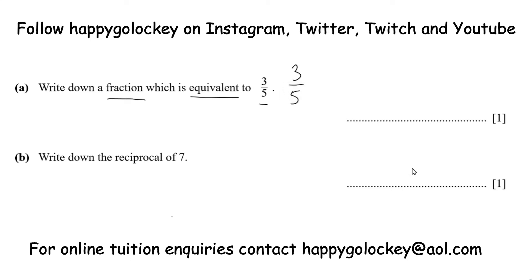The easiest way to work around that is to multiply top and bottom by any number you like. Simplifying is when you get things smaller and more simple. Equivalent is as long as it's equal, you're ok. The only way it's going to be equal is by multiplying top and bottom by the same number. So I'm going to go for 6 — 3 multiplied by 6 is 18, and 5 multiplied by 6 is 30. So 18 thirtieths is equivalent to 3 fifths. That's one example of many infinite possibilities. Multiply top and bottom by the same number to get an equivalent fraction.